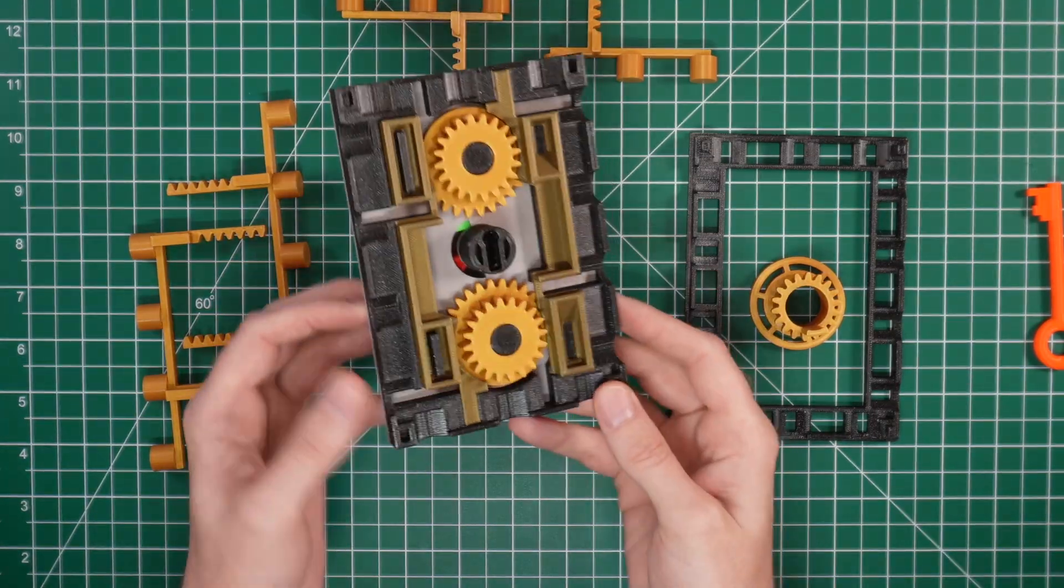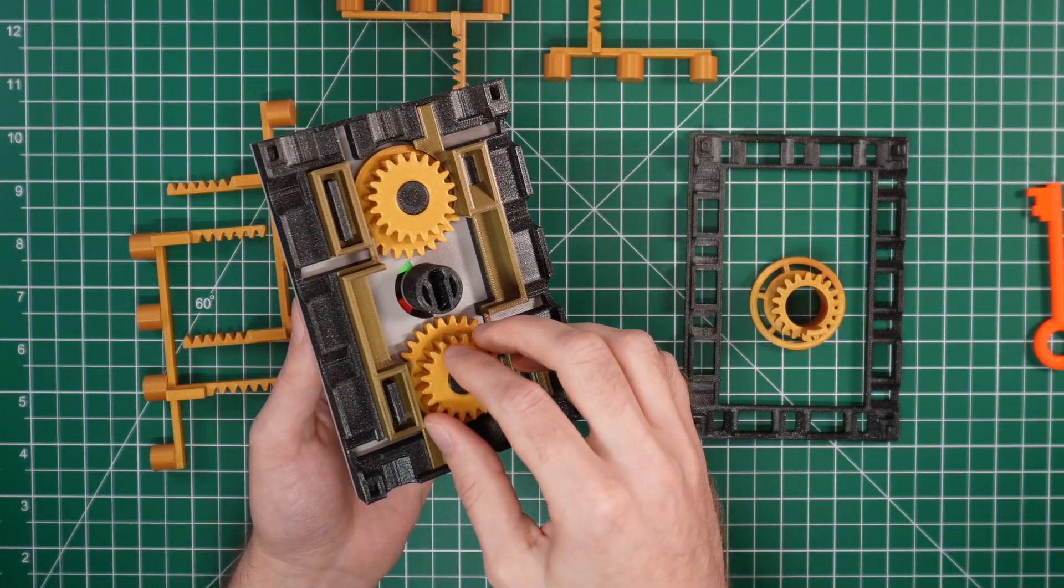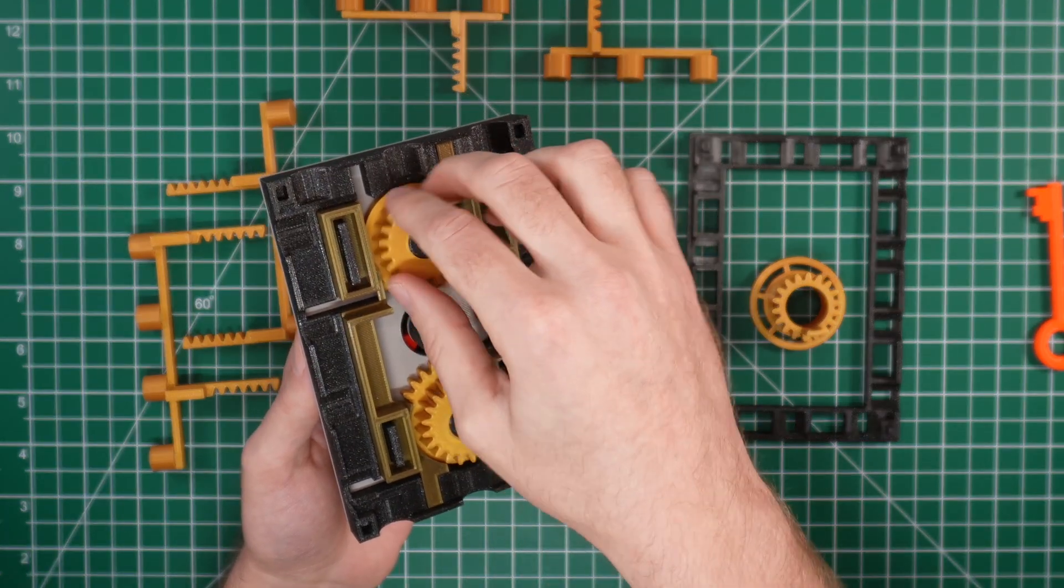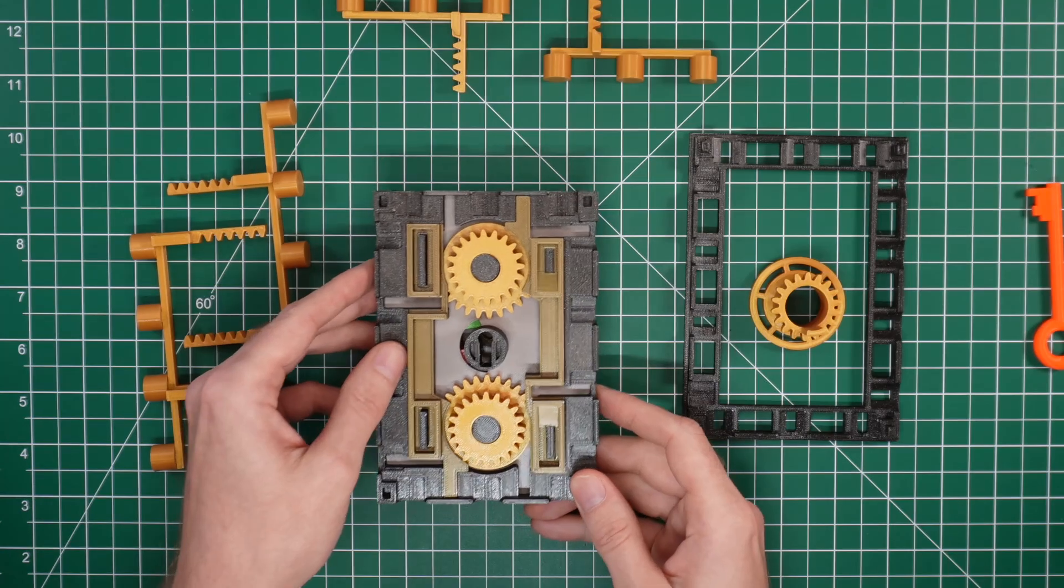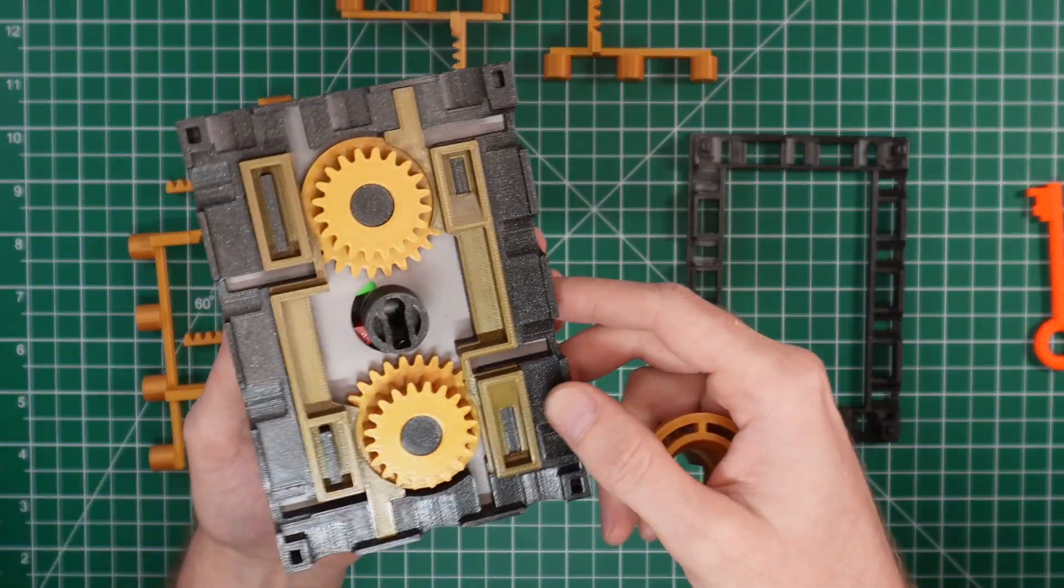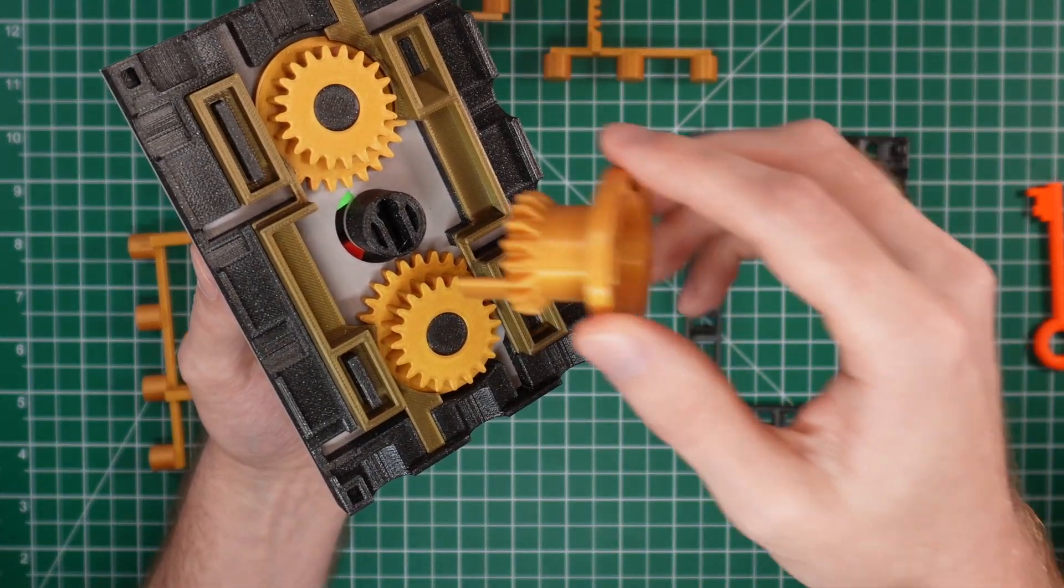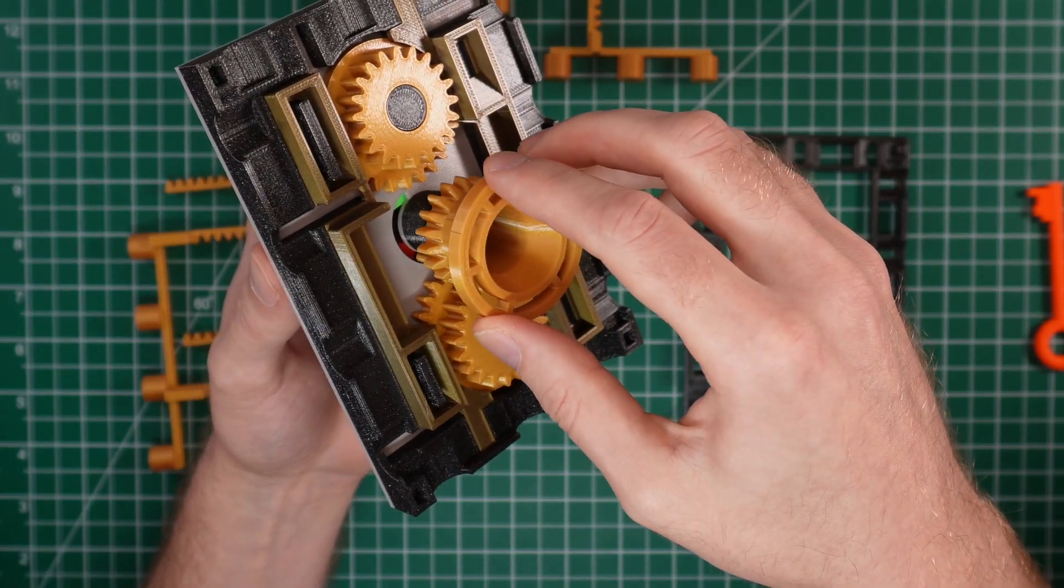Next we're going to start assembling the vault mechanism. Start by making sure the door is locked, so the red bolt is visible. Then rotate the outer two gears clockwise as far as they'll go. Then add the center gear, making sure the arm extends into the little opening which is now partially blocked by the red bolt.